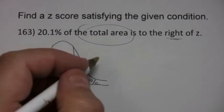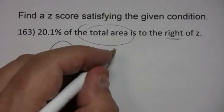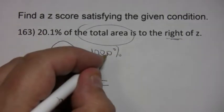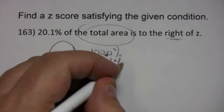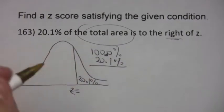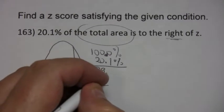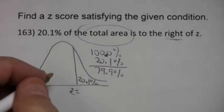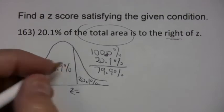What you have to remember is that there's 100% of the area under the curve, and if 20.1% is to the right, that means that 79.9% of the area is to the left.